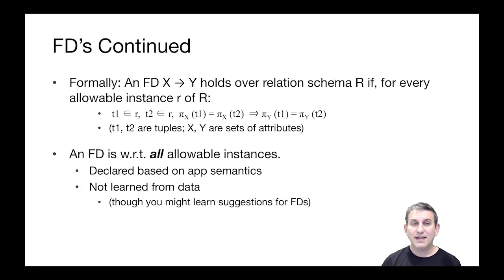Formally, we'll say that an FD X determines Y holds over relational schema R if for every allowable instance, little r of R — meaning for every state of this table, subsequent to inserts, deletes, etc. — if we're given two tuples T1 and T2, and we project T1 down to column X and project T2 down to column X, if those are the same (equal on column X), that implies that when we project down to Y, they're both the same as well.